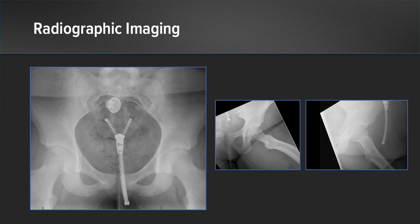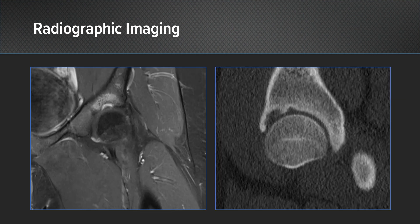On her plain radiographs, you can essentially see a relatively normal congruent joint with a small area of lucency in the superior weight-bearing surface of the acetabulum. And on more advanced diagnostic imaging, it's clear on the CT scan that you can see a large focus of subchondral cyst with significant surrounding bone marrow edema.